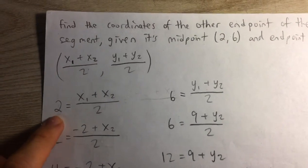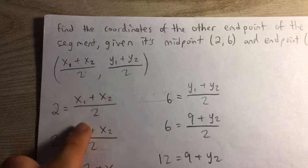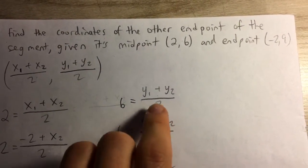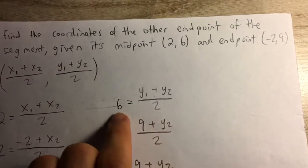And we know that this is going to be equal to 2. The x-coordinate of the midpoint is equal to 2 because we're given the midpoint. And we know the y-coordinate, the midpoint of the y-coordinate is going to be equal to 6.